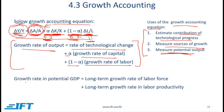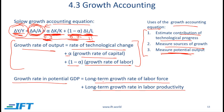Here is another variant of the growth accounting equation: the growth rate in potential GDP is equal to the long-term growth rate of the labor force plus the long-term growth rate in labor productivity. For example, if the labor force is increasing by 2% and the long-term growth rate in labor productivity is 3%, then the growth rate in potential GDP is 5%.